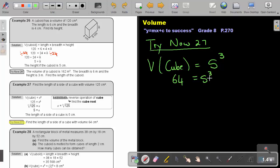We said previously that the reverse operation of cube is cube root. So to get S, I take the cube root of 64. What will be the cube root of 64? You can press it on your calculator. That will be 4. So the length of a side of a cube is 4 centimeters.